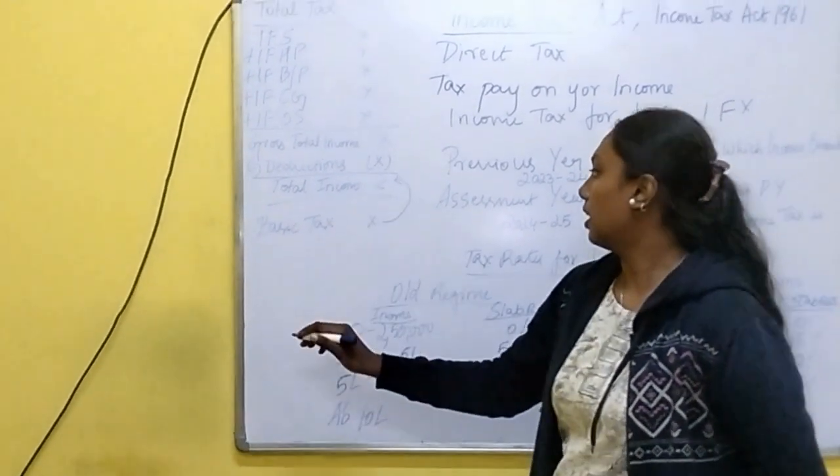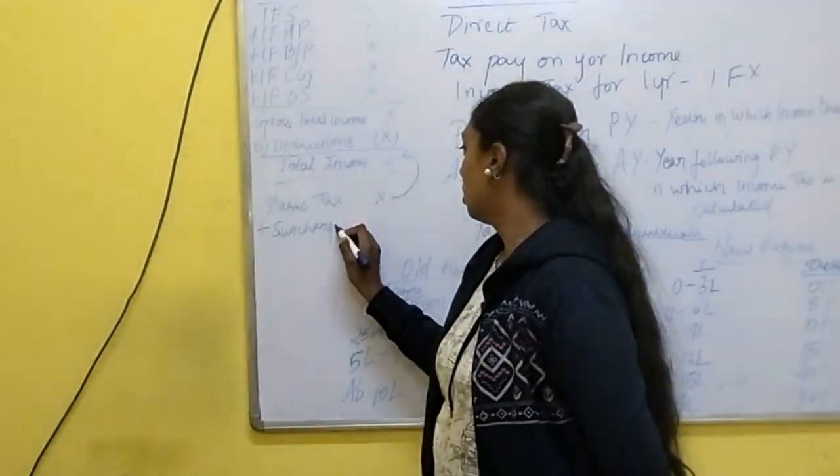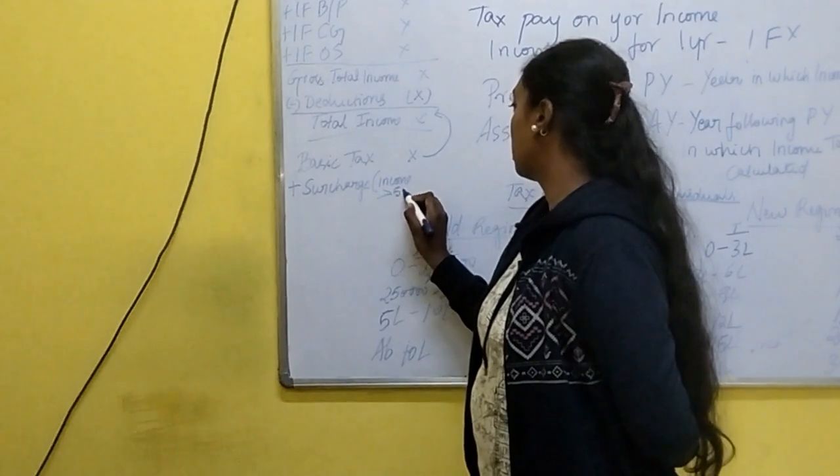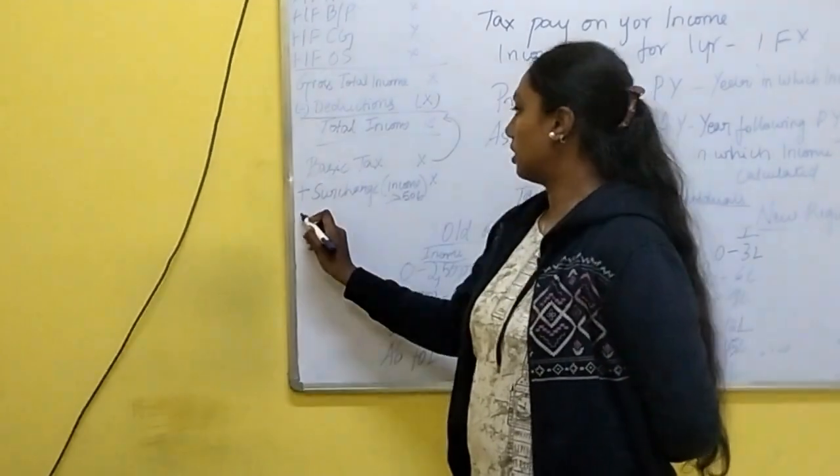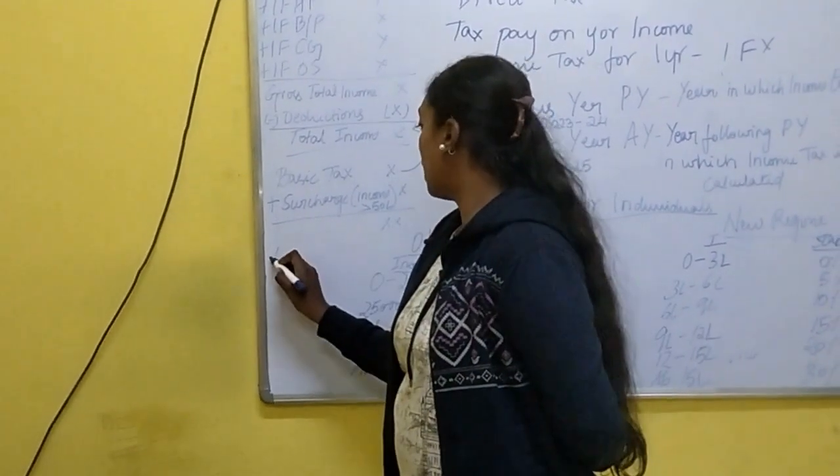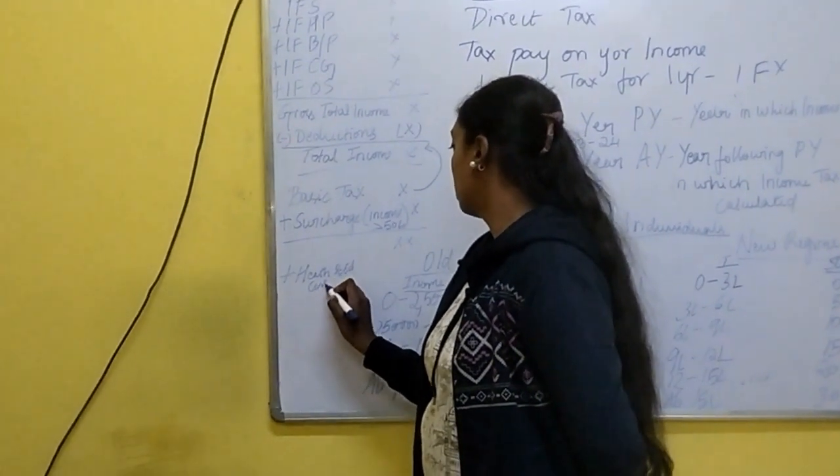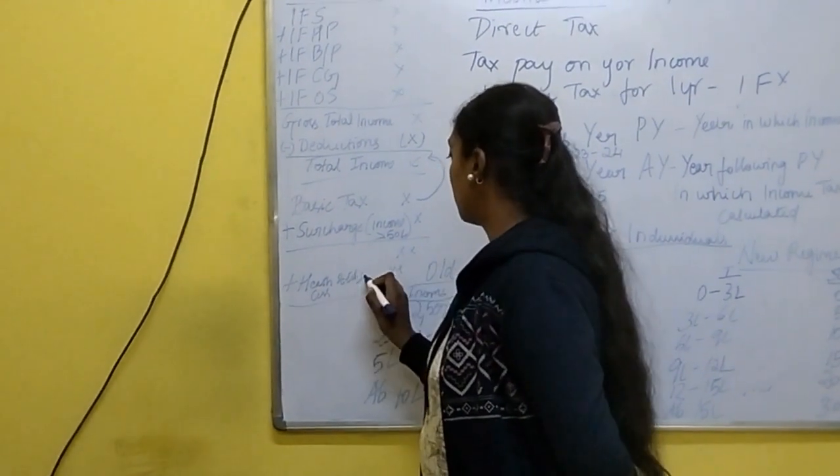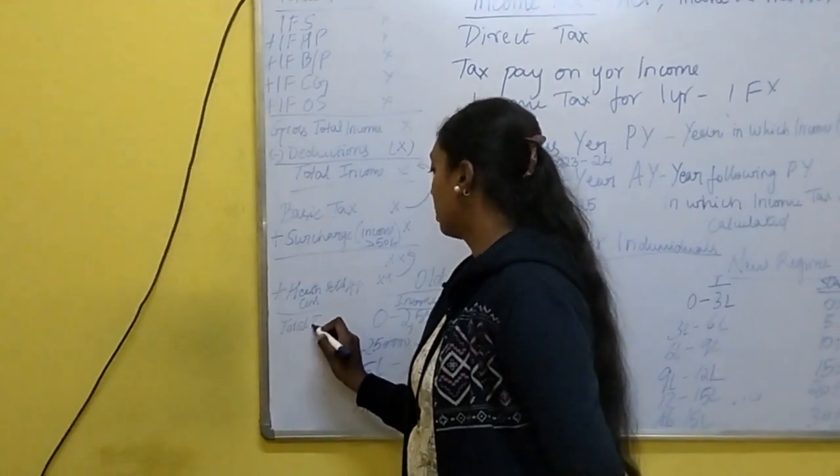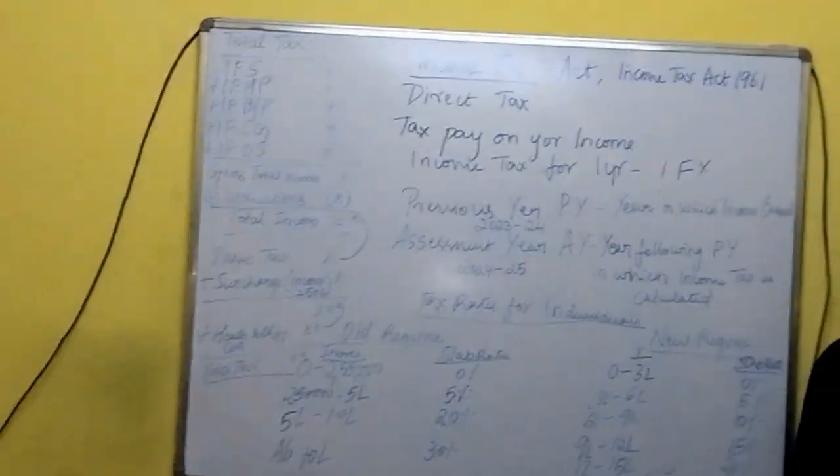Then next we will add surcharge. Surcharge will be added if income is more than 50 lakhs. Surcharge is a tax on tax. Then we will add health and education cess, that is 4% on this amount. Next we will find the total tax. This is some of the basic concepts of income tax.